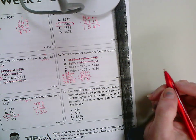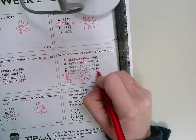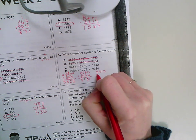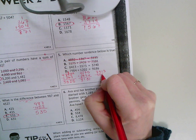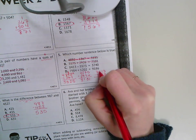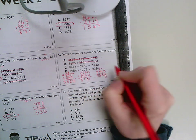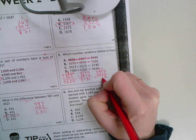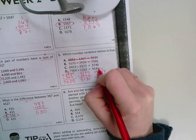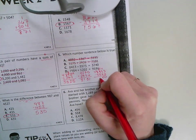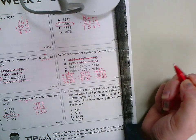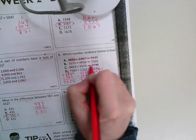Letter C. 8,413 minus 5,573. 3 minus 3 is 0. I need to borrow for my next one. 11 minus 7 is 4. I can't do 3 minus 5, so I need to borrow again. 13 minus 5 is 8, and 7 minus 5 is 2. So that one does not work either.